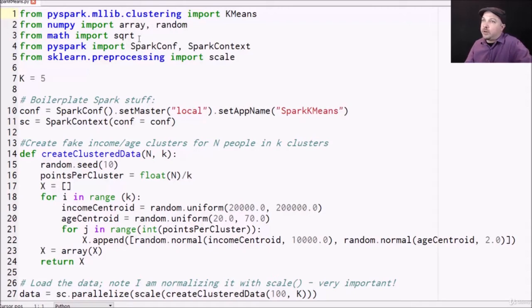And MLLib often does require NumPy arrays as input. But we're going to import the square root function and the usual boilerplate stuff. We need SparkConf and SparkContext pretty much every time from PySpark.